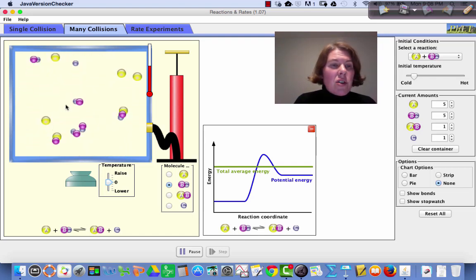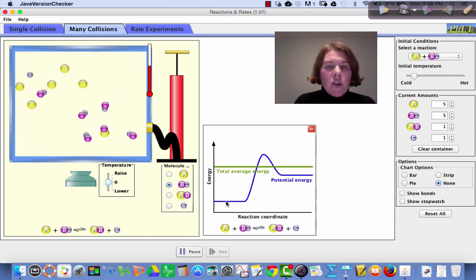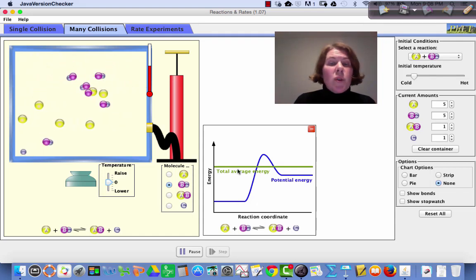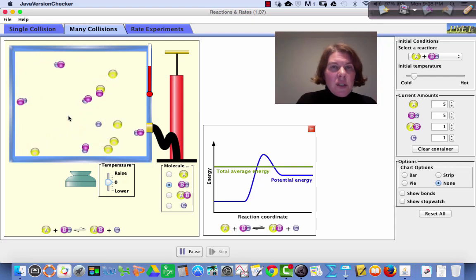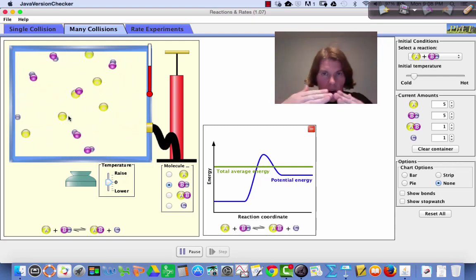And as I raise the temperature here, we can see that the kinetic energy is increasing, and we can also see that effective collisions, like the one that we see right here, are suddenly occurring. So we started, if you look over at this potential energy diagram over here, we started with our total average kinetic energy being lower.